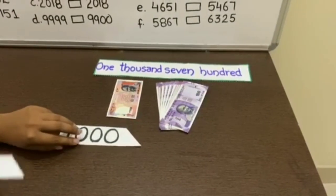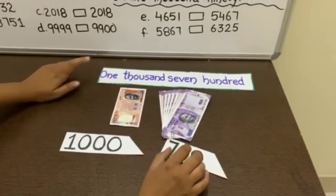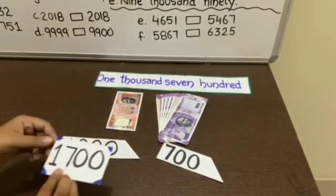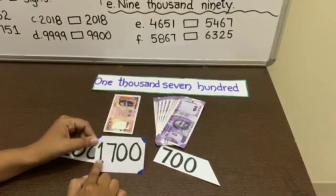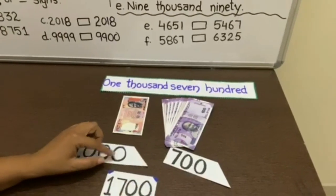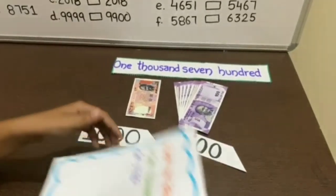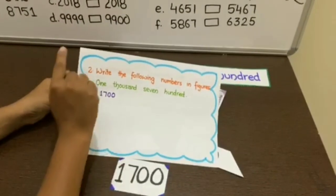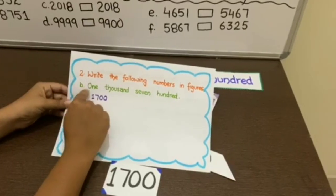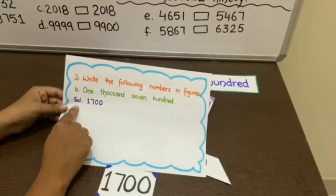The statement is 1700, so to write this statement in figures, it will be written as 1,700. To solve the question in your notebook, you will write the statement, then the part you are solving, and the solution.